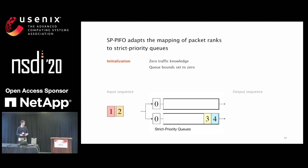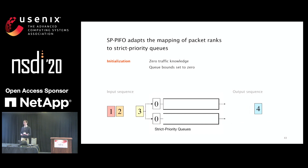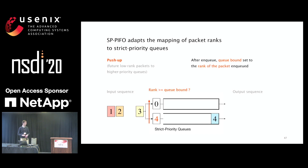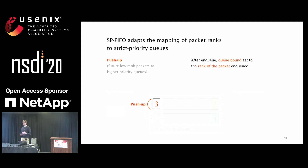To prevent that scheduling error, we want to push the lower-rank packet into a higher priority queue. SP-PIFO does this via a push-up mechanism: we increase the queue bound of the lower priority queue to the rank of the packet already enqueued — in this case, to 4. This way, the next arriving packet with rank 3 is mapped to the higher priority queue. The push-up mechanism pushes low-rank packets to higher priority queues to prevent scheduling errors in lower priority queues.